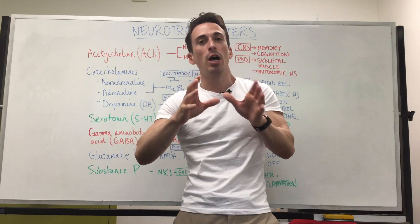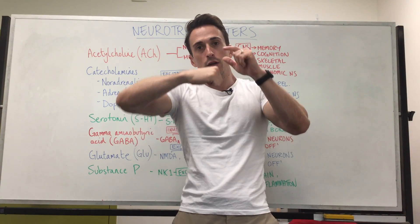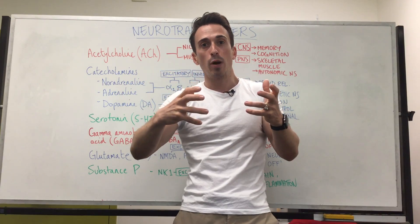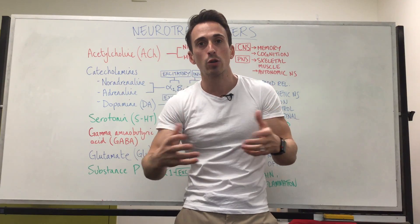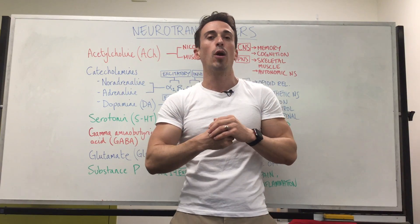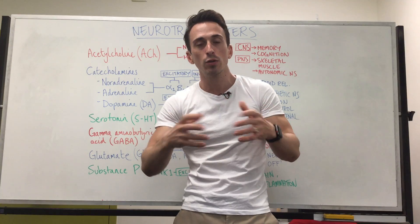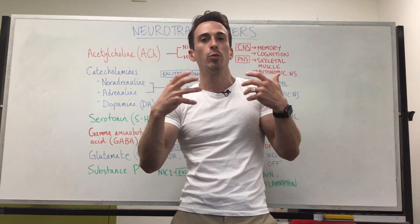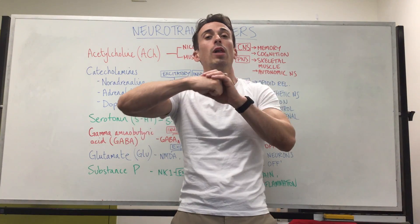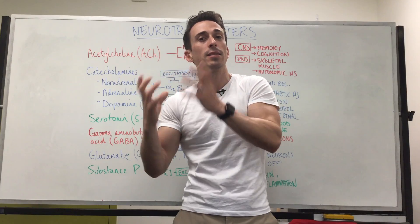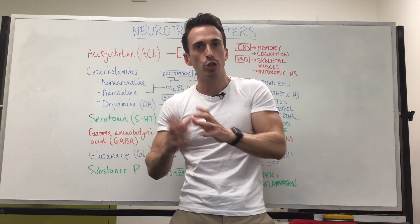Neurotransmitters don't just bind to neurons — they may also bind to tissues. They could bind to muscles, cells, or glands. They can bind to multiple different what we call effectors, something that will elicit some sort of change.